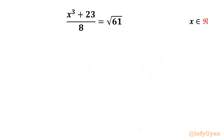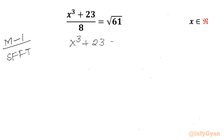I will share two different ways to proceed with this question. Method number 1 is based on Simon's Favourite Factoring Trick. First, I will write x³ + 23 = 8√61, or equivalently x³ = 8√61 − 23.